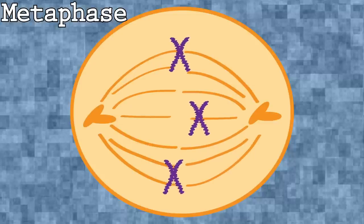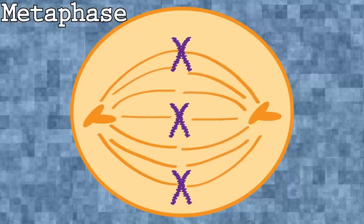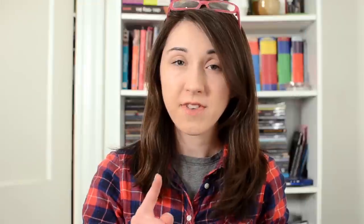In metaphase, the chromosomes align down the middle of the cell. Those spindle fibers attach to the chromosomes at those centromeres, one on each side, and they begin to play a tug of war with the chromosome. And this is what helps pull those chromosomes to the very middle of the cell.